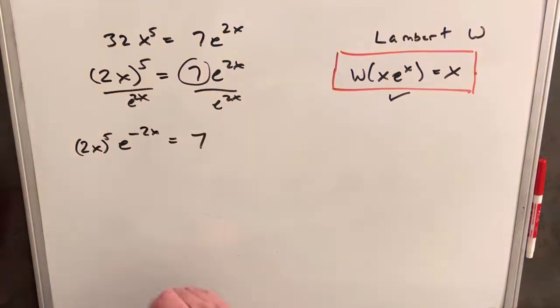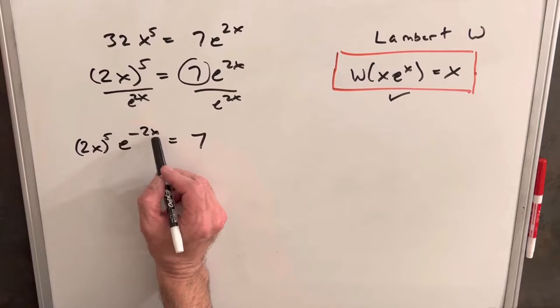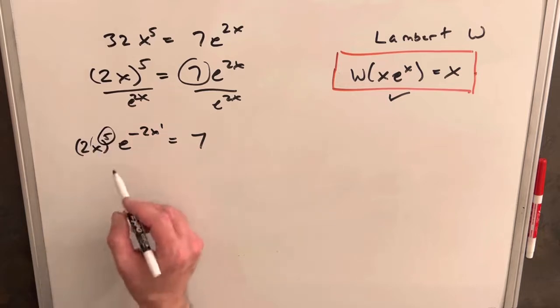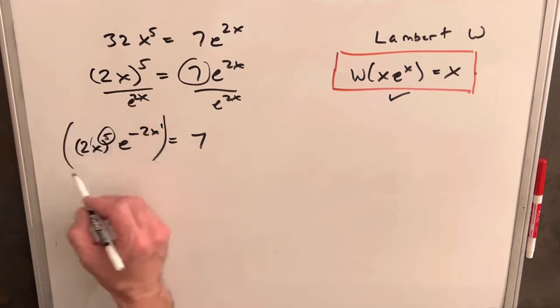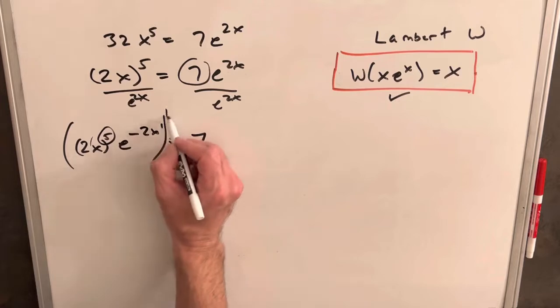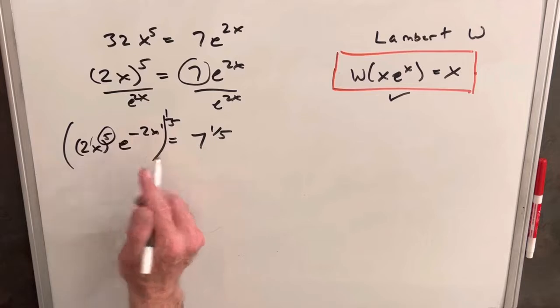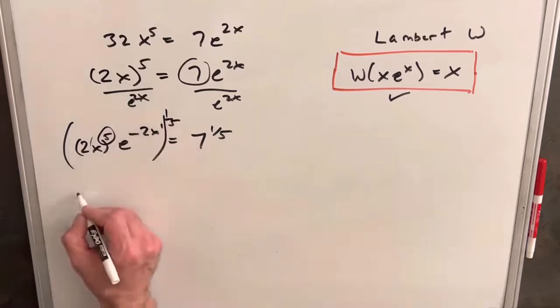And then the first problem that comes to mind now is this x is a first power and this x is going to be a fifth power. So let's take a fifth root on both sides. I'm going to write it as 1 over 5. The same thing we have to do it on the right. So doing that, applying our power, separating this...